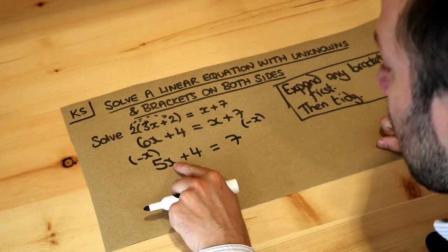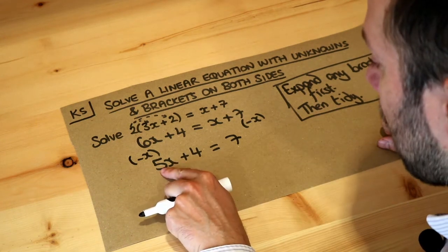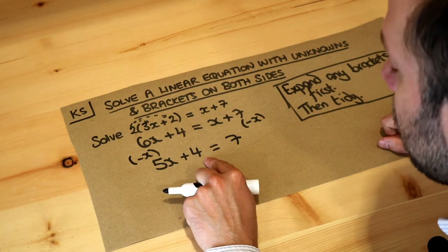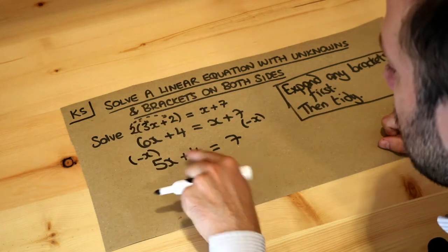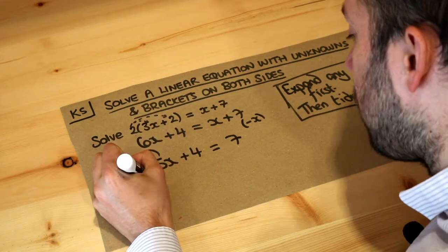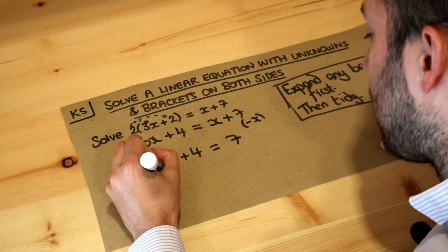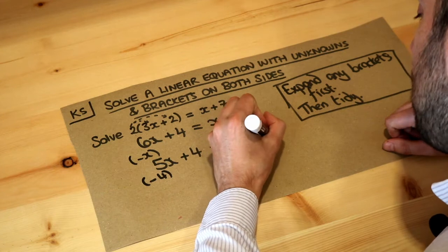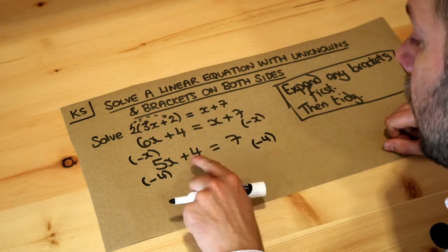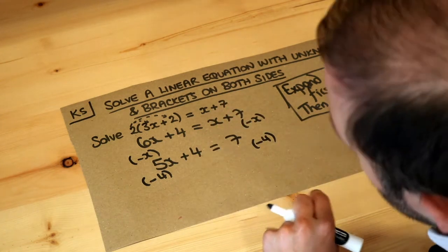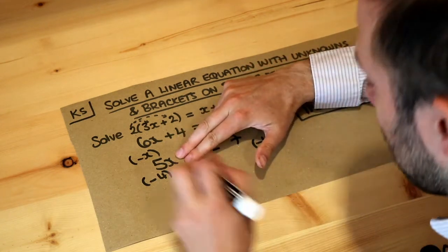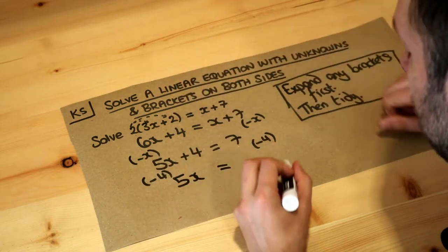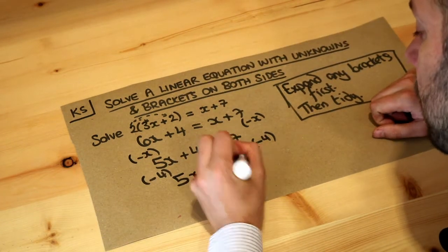What do we do next? x was multiplied by 5, then we added 4 to it. We undo the last thing done, which was the plus 4, and do the opposite — subtract 4 from each side to get rid of the plus 4. Subtracting 4 leaves 5x, and 7 minus 4 is 3.